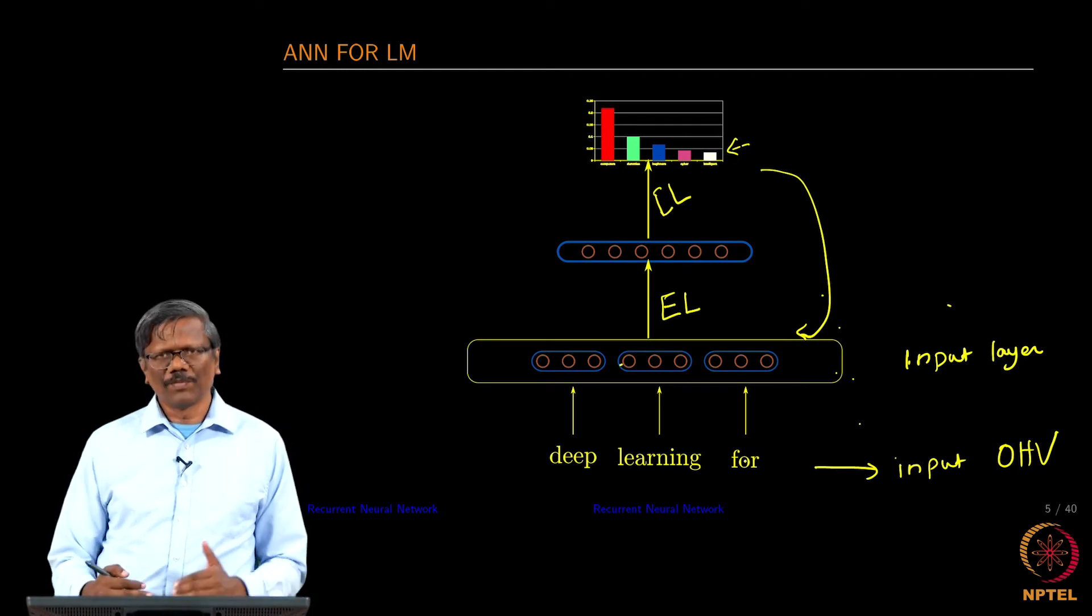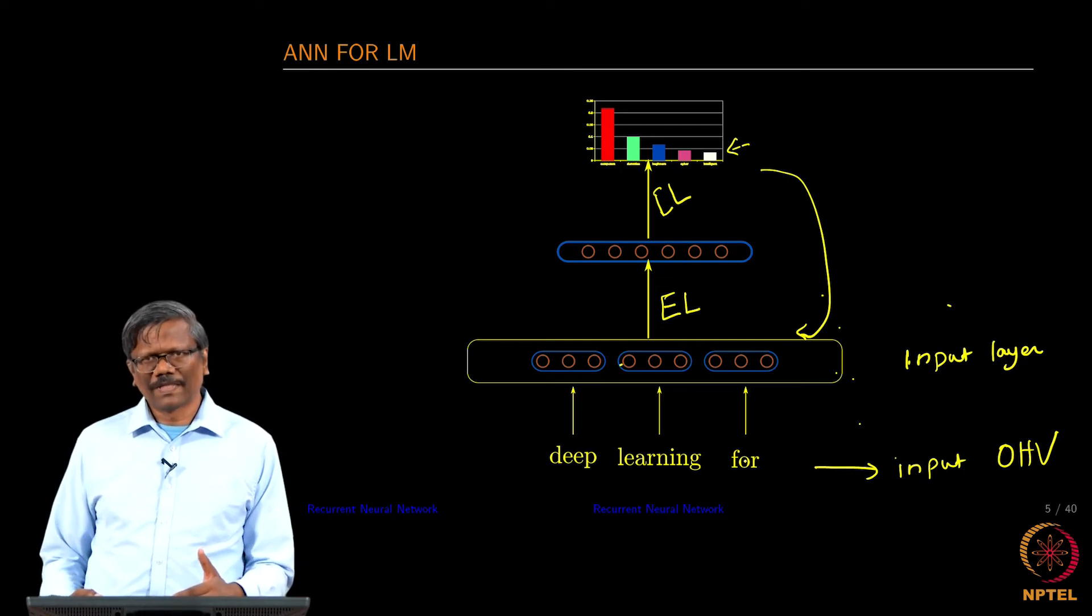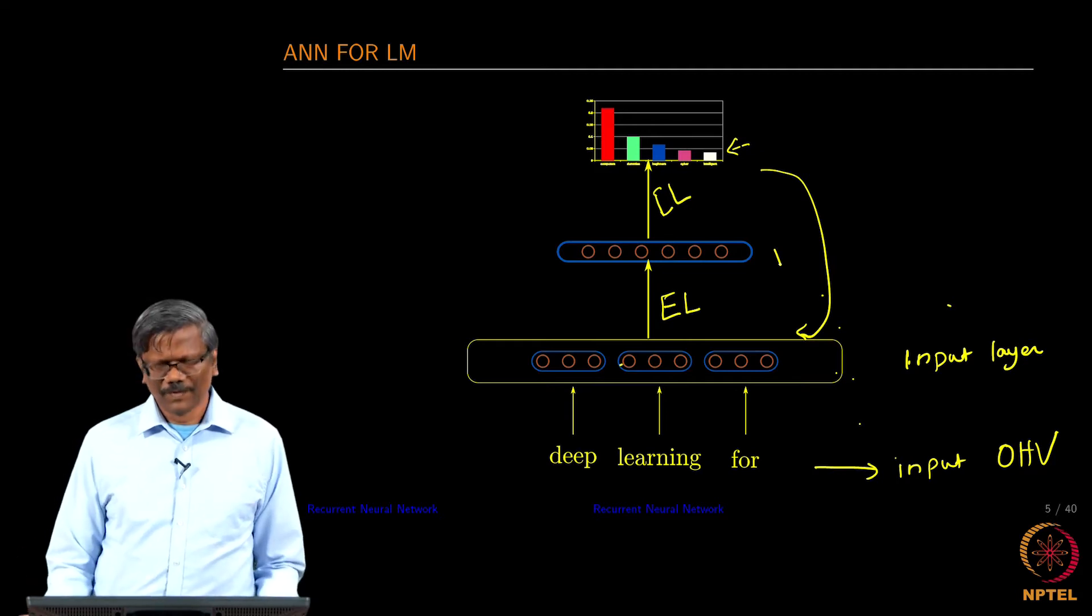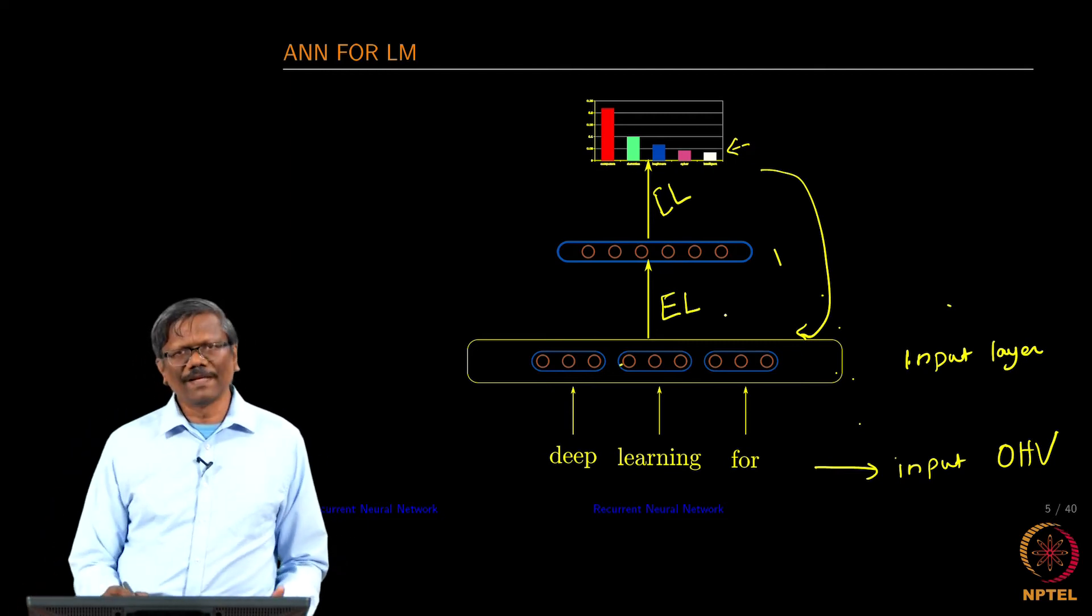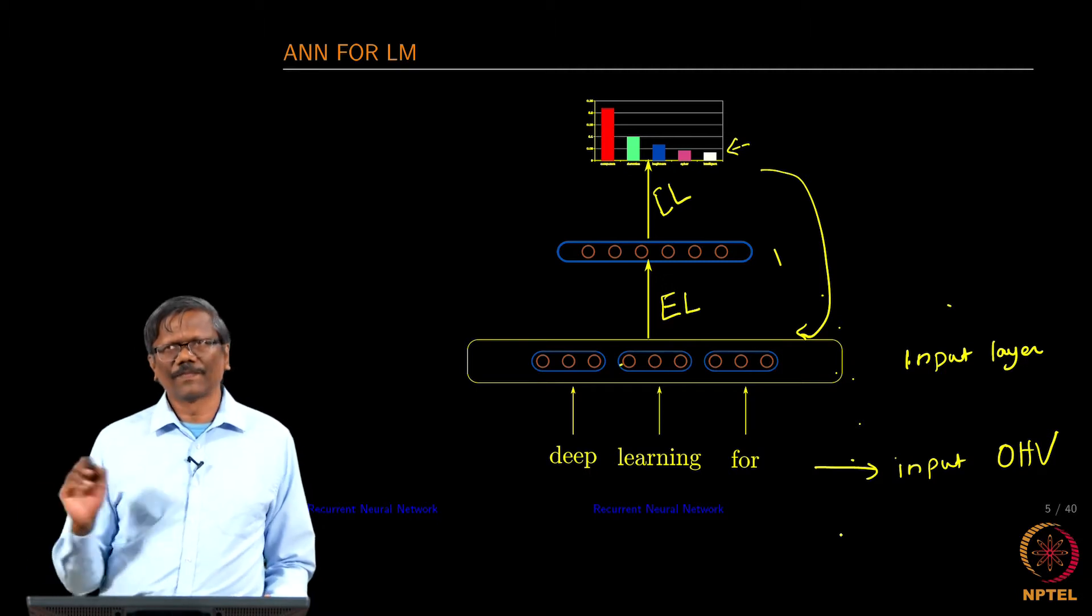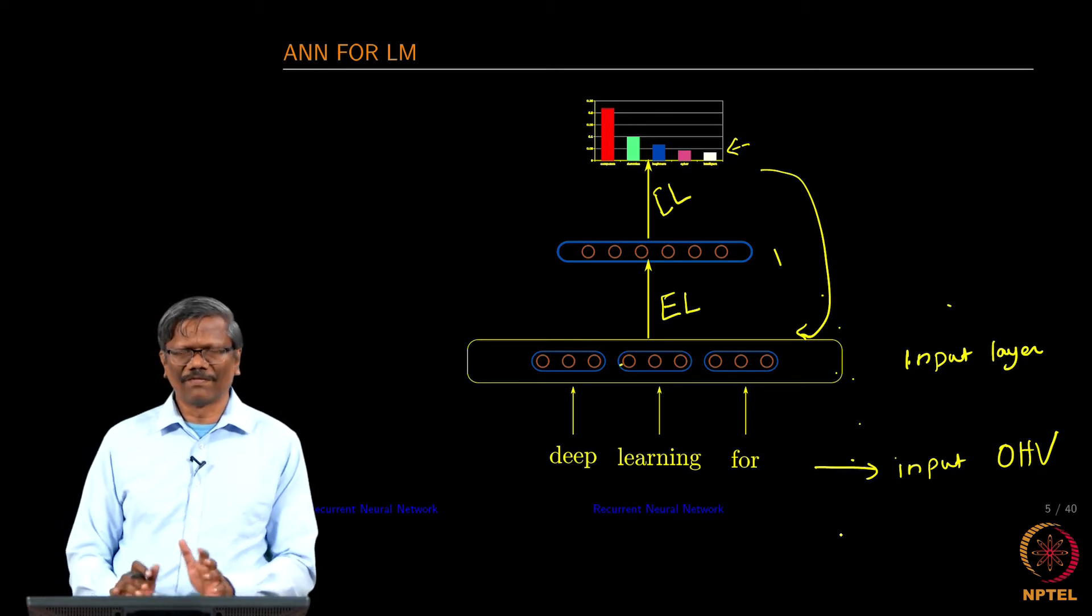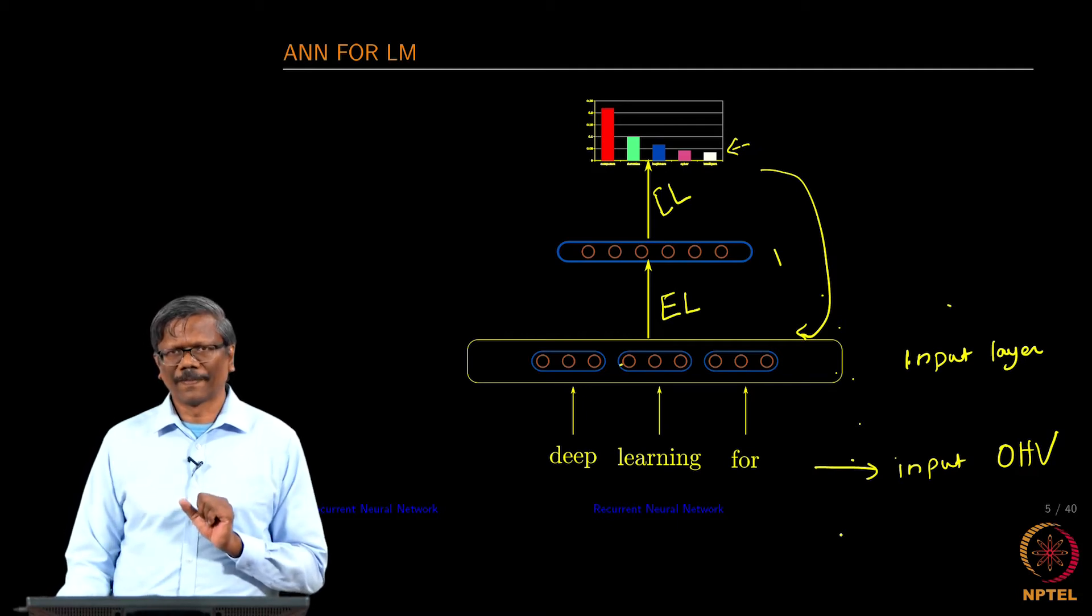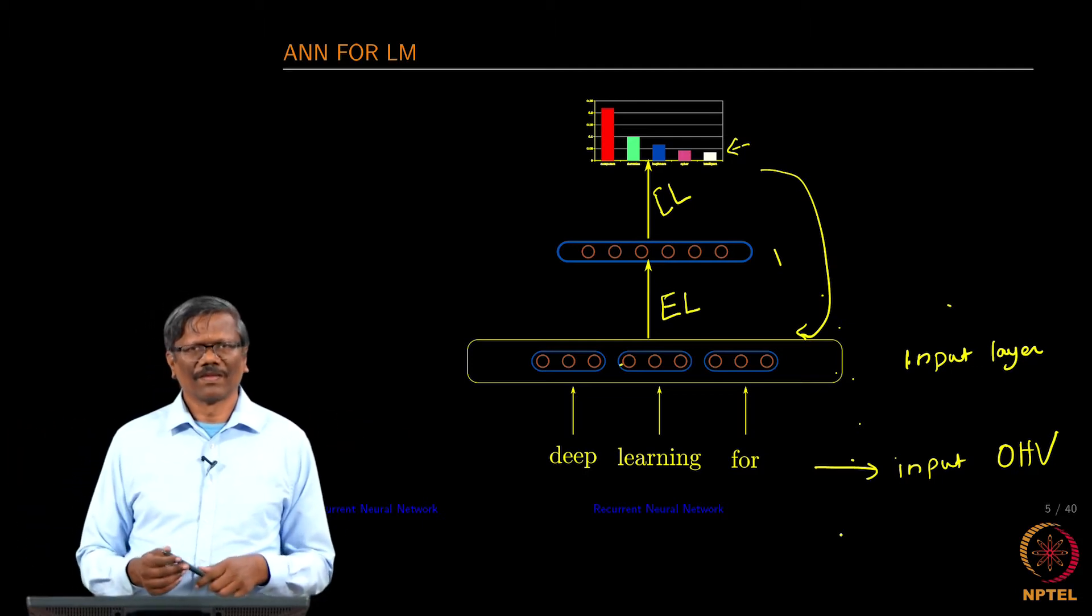In this fashion you can input all the words in this network. Let the network get trained on the prediction and once it is done we can use the model to really predict the next word here. So we not only learn the word embeddings, but also have the capability to predict the next word. This we have not seen earlier - we only saw how the central word can be predicted in the case of a CBOW model or in the case of the skip gram how the context words can be found out.